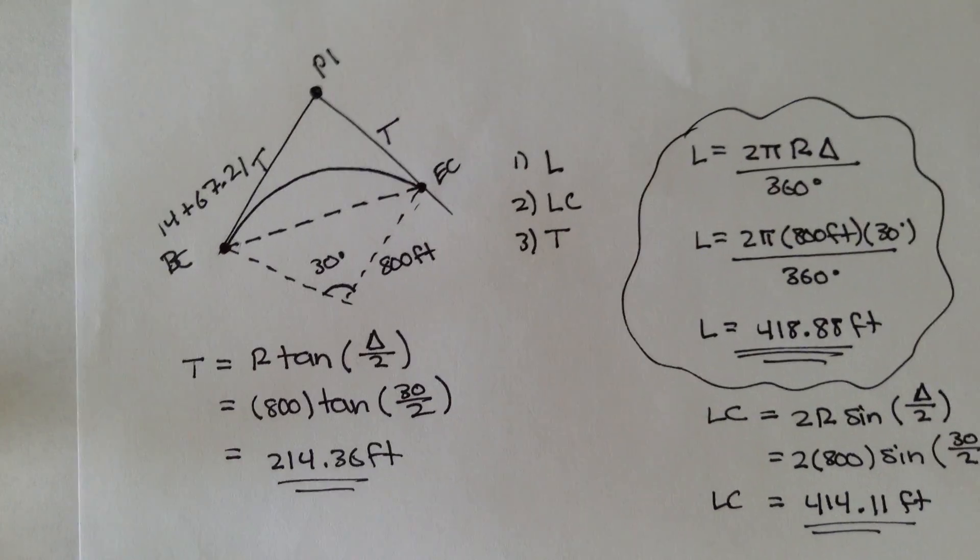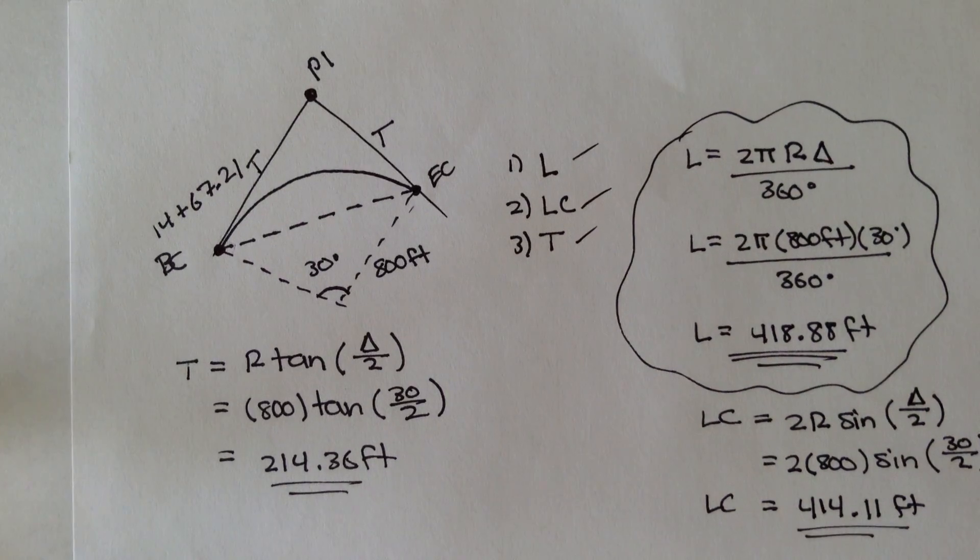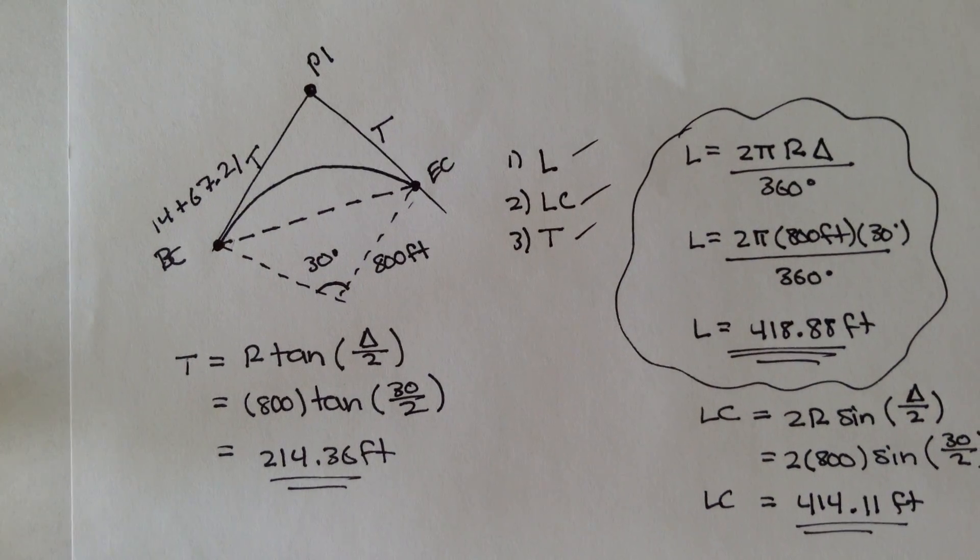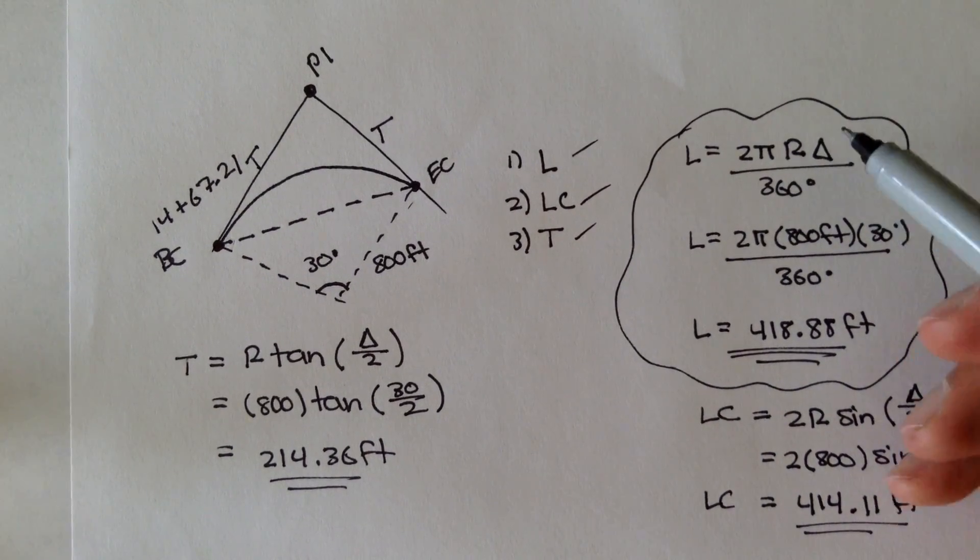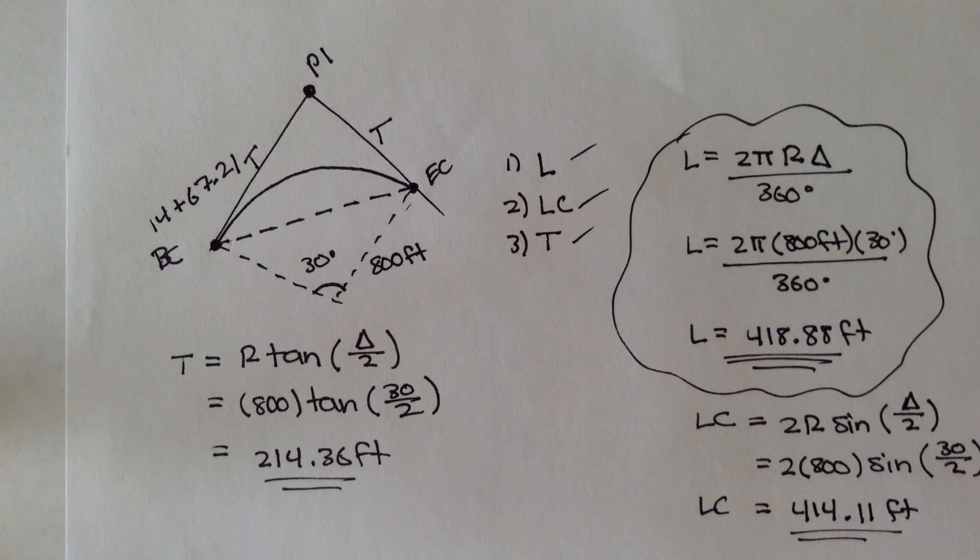Notice that for all of these parameters, or all of these variables we needed to find, we only needed two things. We needed the interior angle delta, and we needed the radius R.